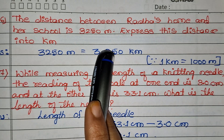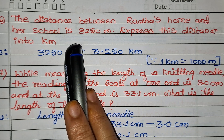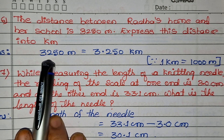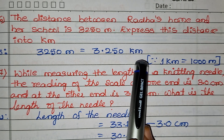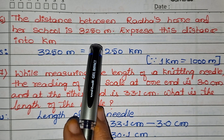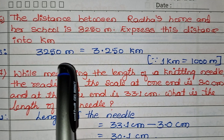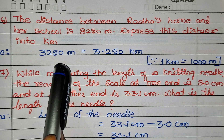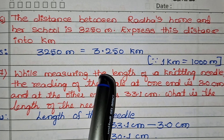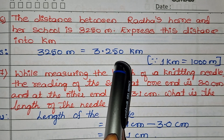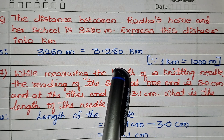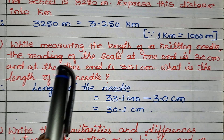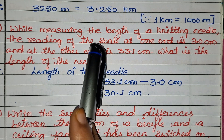The distance between Radha's home and her school is 3250 meters — express this in kilometers. As we know, 1 kilometer equals 1000 meters, so 3250 meters equals 3.250 kilometers, which means 3 kilometers 250 meters.